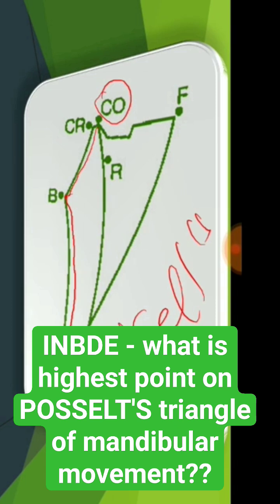The phase is B to CR. So from B to CR, or from CR to B — when you move from CR, remember CR is the most superior anterior position of the condyle.